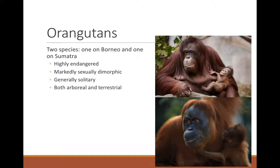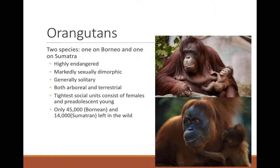Orangutans are generally solitary, but studies of vocalizations show the long call coordinates movements of a large group over the long term — everyone in the territory moves in the same direction for the same amount of time. Body size mediates how much time they spend on the ground. The tightest social unit is females with pre-adolescent young. There are only 45,000 Bornean orangutans and fewer than 14,000 Sumatran orangutans left, making them the most endangered great ape except for one gorilla subspecies. We very likely face their wild extinction within our lifespan.